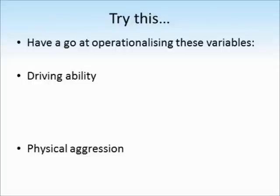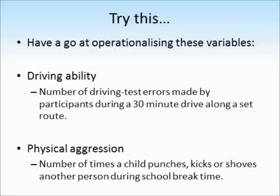Have a go at operationalising these variables: driving ability and physical aggression. Pause the video while you try. For driving ability, we could measure the number of driving test errors made by participants during a 30-minute drive along a set route — that's very specific. For physical aggression, we could measure the number of times a child punches, kicks, or shoves another person during a school break time. Here I've specified only those three behaviours, so that's my definition of physical aggression.